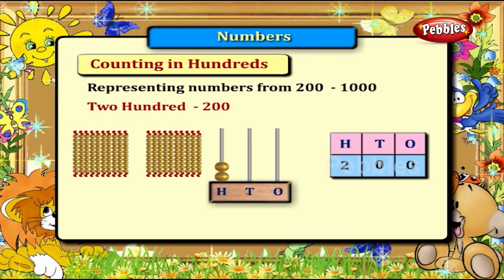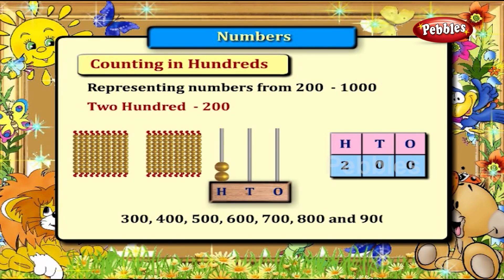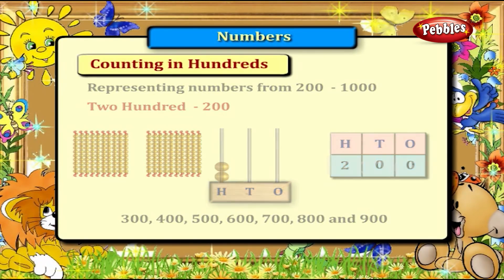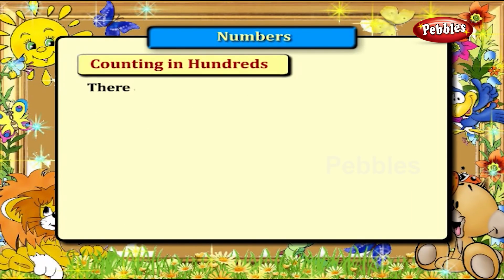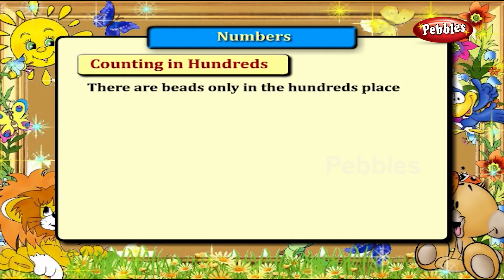Similarly, it is the same in the case of other numbers like 300, 400, 500, 600, 700, 800 and 900. There are beads only in the hundreds place.